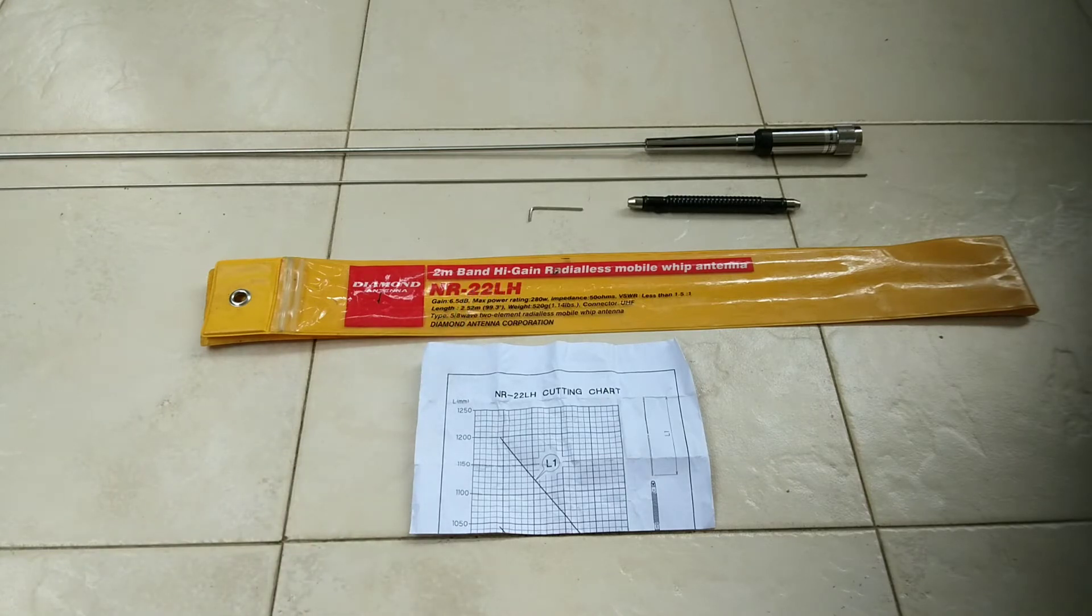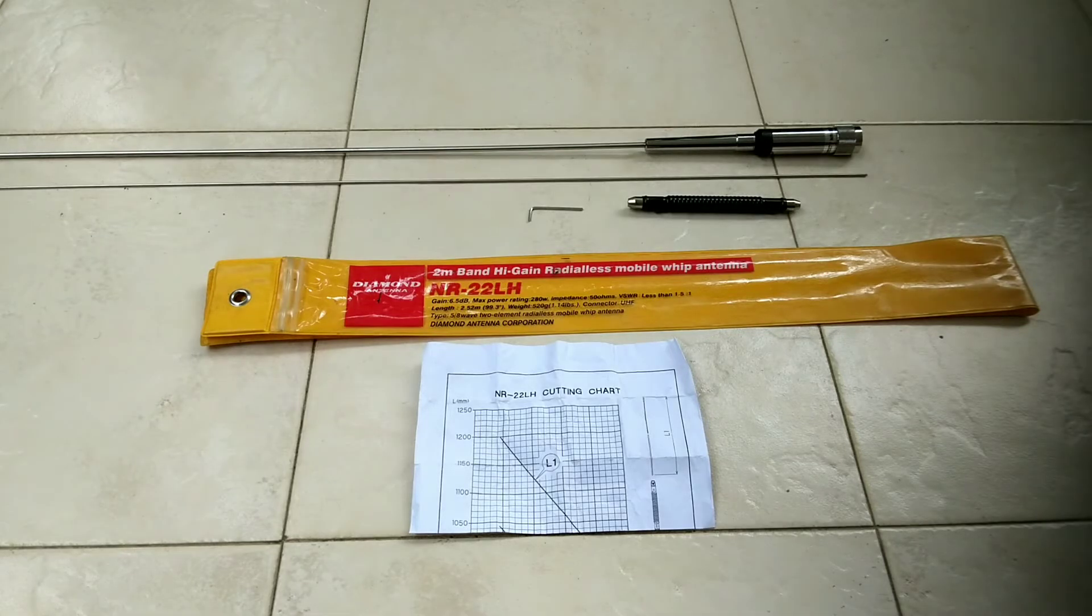The antenna gain is 6.5 dB and rated power is 280 watts. It's a 50 ohm antenna and the VSWR is between 1.5 to 1. The total length of the antenna is around 2.52 meters, that means 99.3 inches height. The total weight is 520 grams.